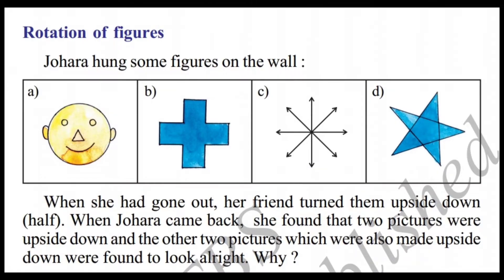There are 4 figures showing how they will rotate: a smiley, a plus mark, a circle shape, an arrow mark, and a star shape.